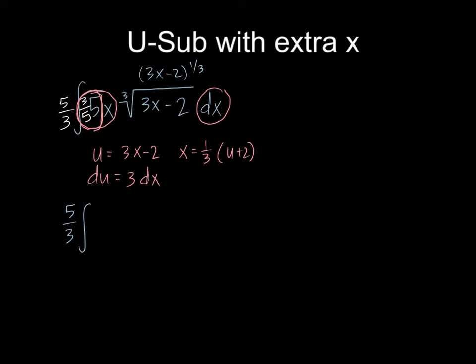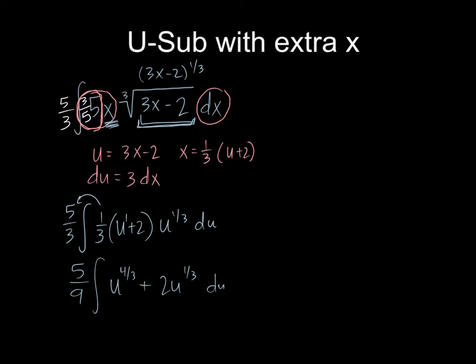So my x is a third of u plus two. And my cube root is going to become u to the one third, because this is u raised to the one third power. This part became all of this, and everything else was du. So as before, we're going to have a constant. We're going to distribute. Let me take out the one third and get five ninths on the outside. And then I'm going to distribute u to the one third. That gives me u to the four thirds, because one plus one third is four thirds, plus two u to the one third du. So now it's ready to integrate. Whenever you do u substitution, you need to end up with a simple formula that you are able to integrate.